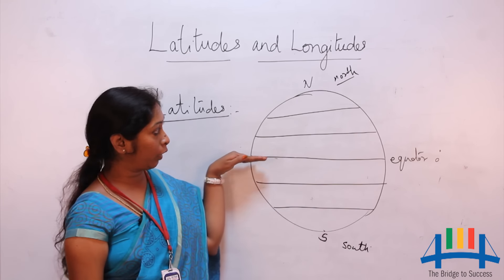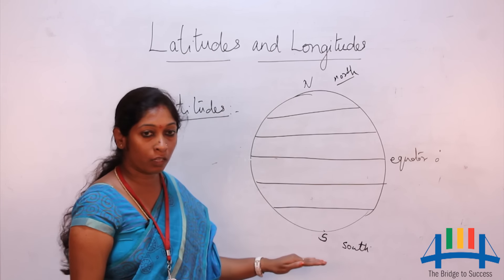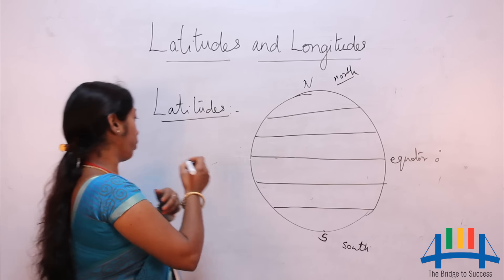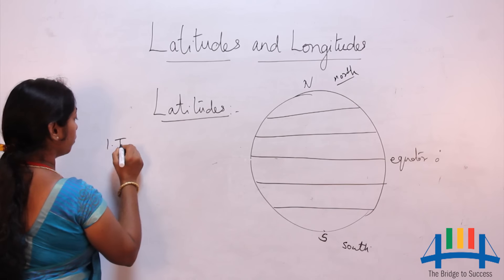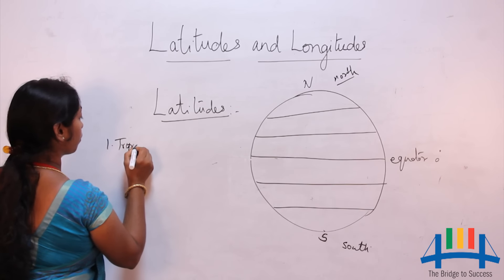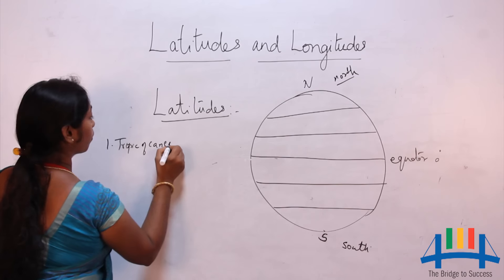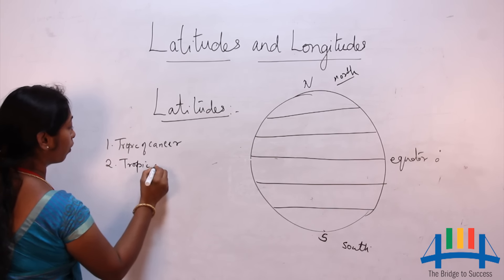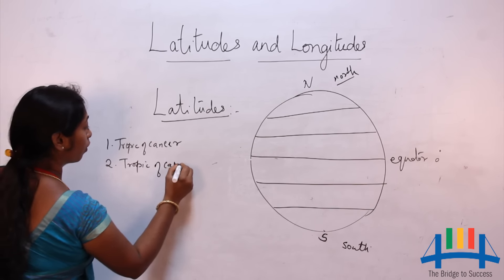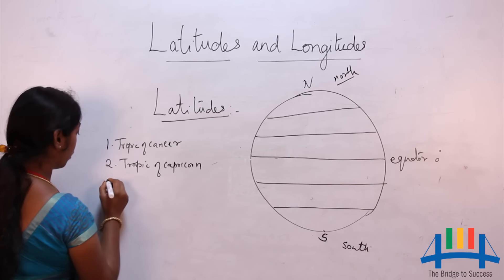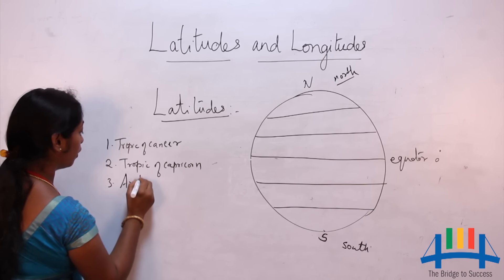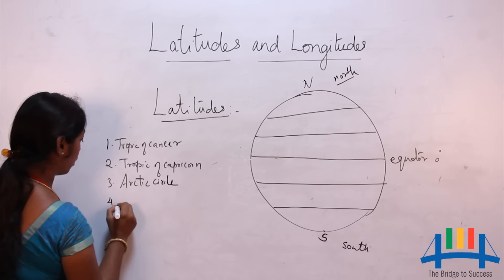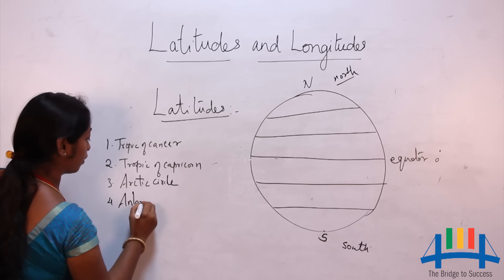Apart from the equator, north pole, and south pole, we have other important latitudes. They are: Tropic of Cancer, Tropic of Capricorn, Arctic Circle, and Antarctic Circle.